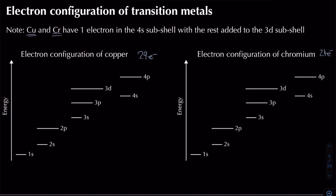For copper: filling up through 1s, 2s, 2p, 3s, 3p gives 18 electrons, then one electron goes into 4s (electron 19), and the remaining 10 electrons fill the 3d subshell completely. When copper loses one electron (from the 4s), Cu+ has a full 3d10 subshell and is not a transition metal ion. However, forming Cu2+ by removing a second electron from 3d gives a partially filled d subshell, so copper can form a transition metal ion.